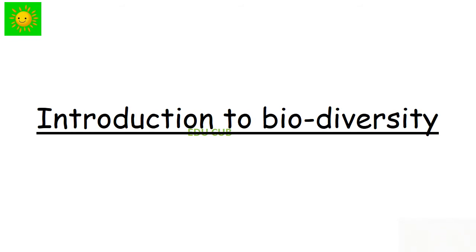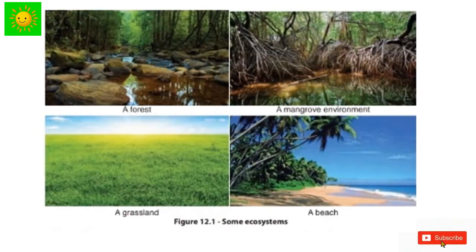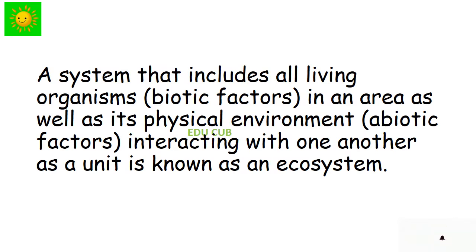Our first sub-topic is introduction to biodiversity. Recall the field visits you attended in lower grades. During those field visits, you would have experienced different types of environments — there can be beaches, forest, monsoon forest, and grassland. A system that includes all living organisms, that means biotic factors, in an area as well as its physical environment, that means abiotic factors, interacting with one another as a unit is known as an ecosystem.